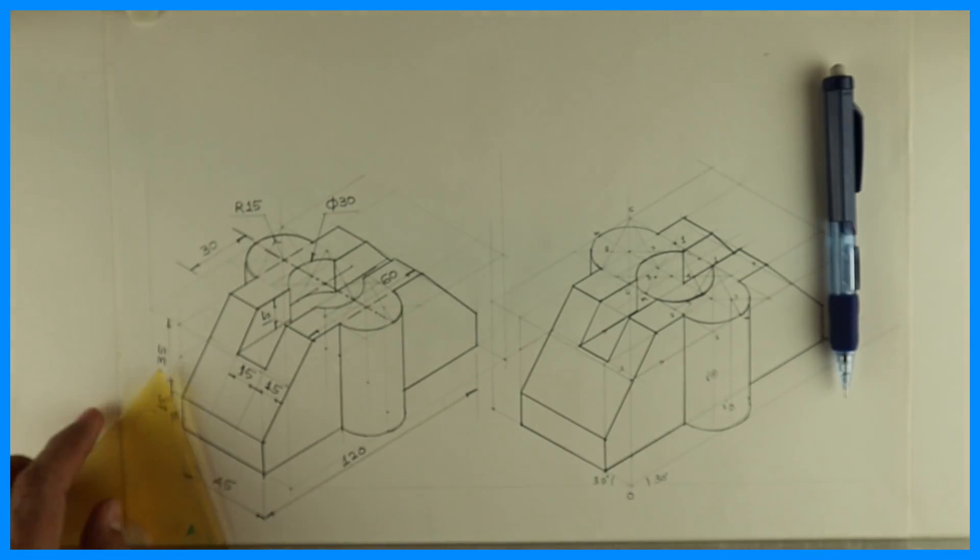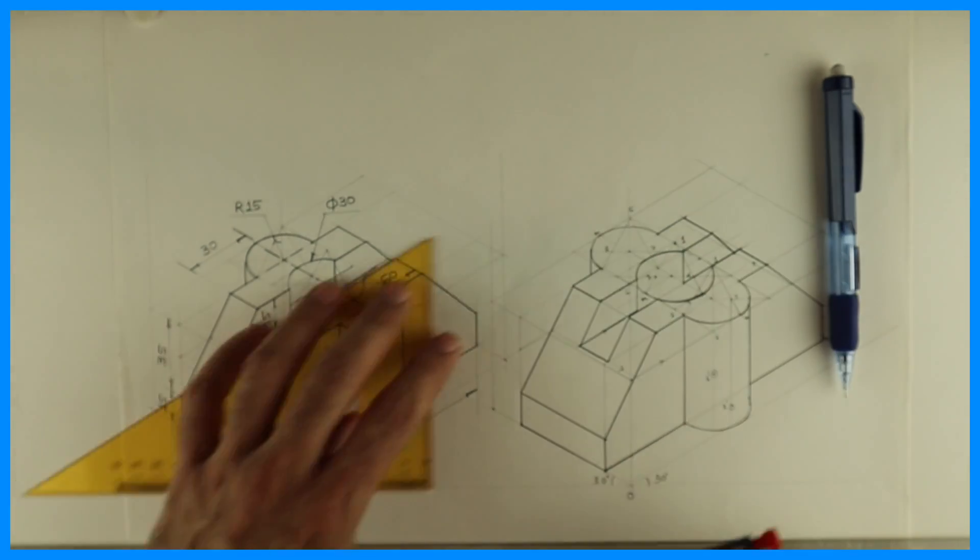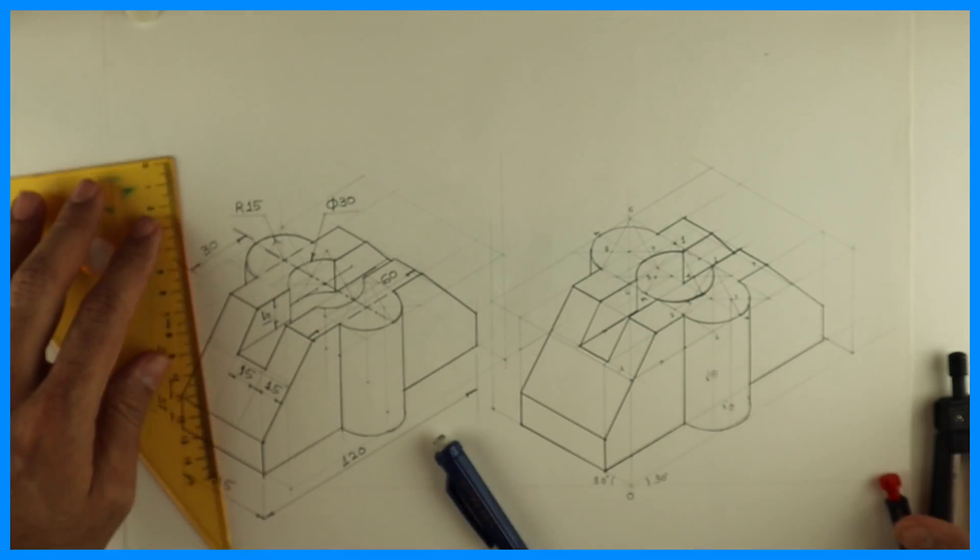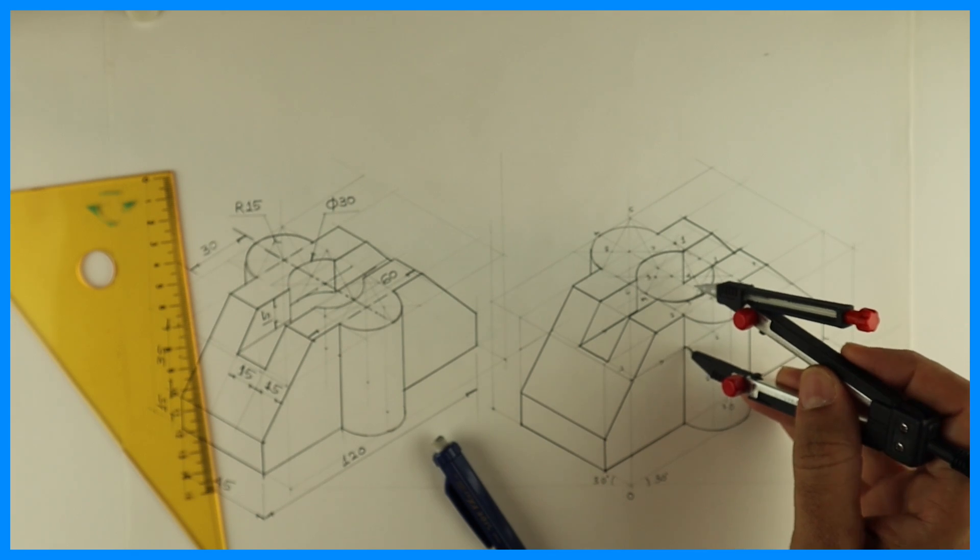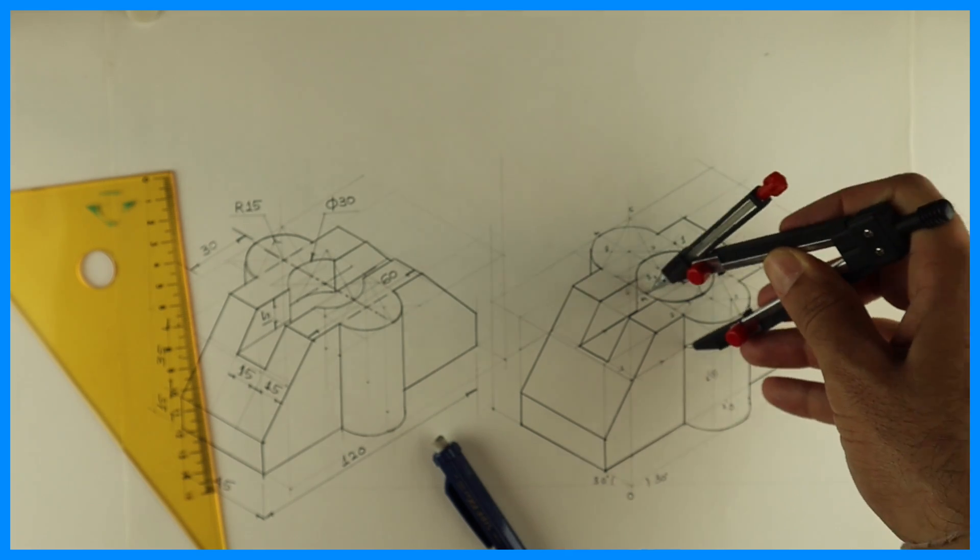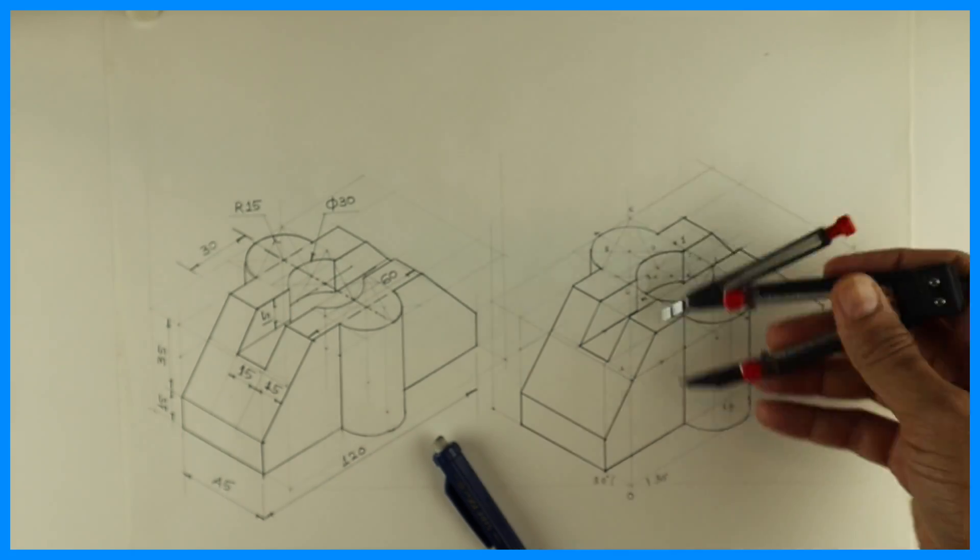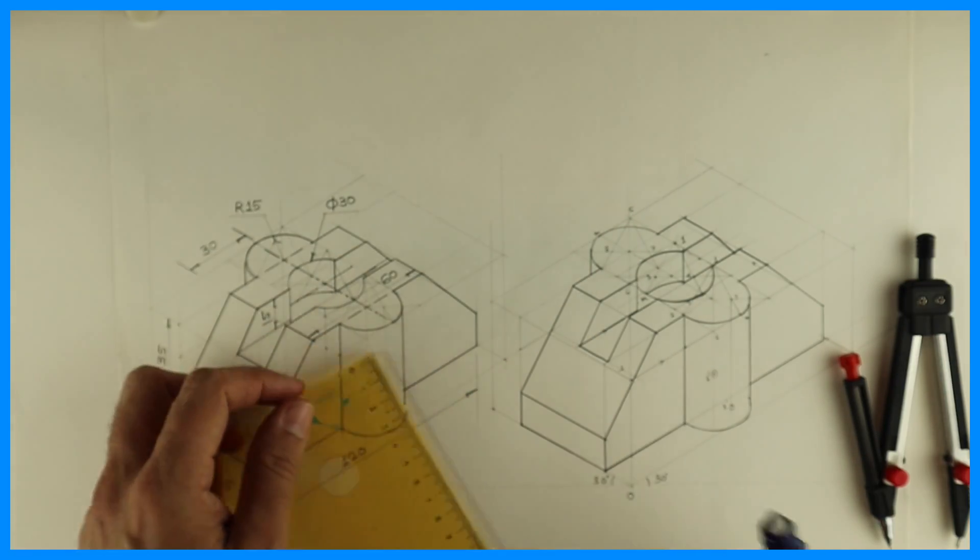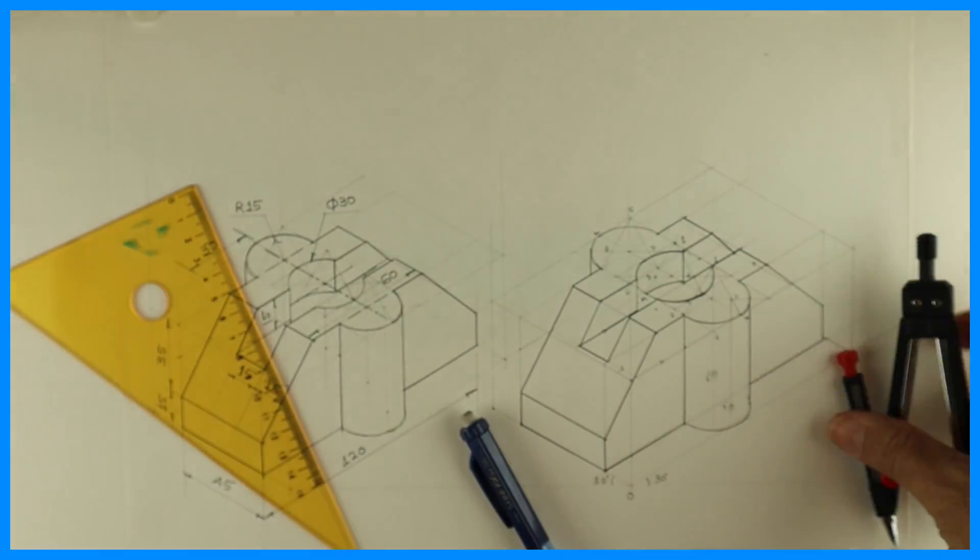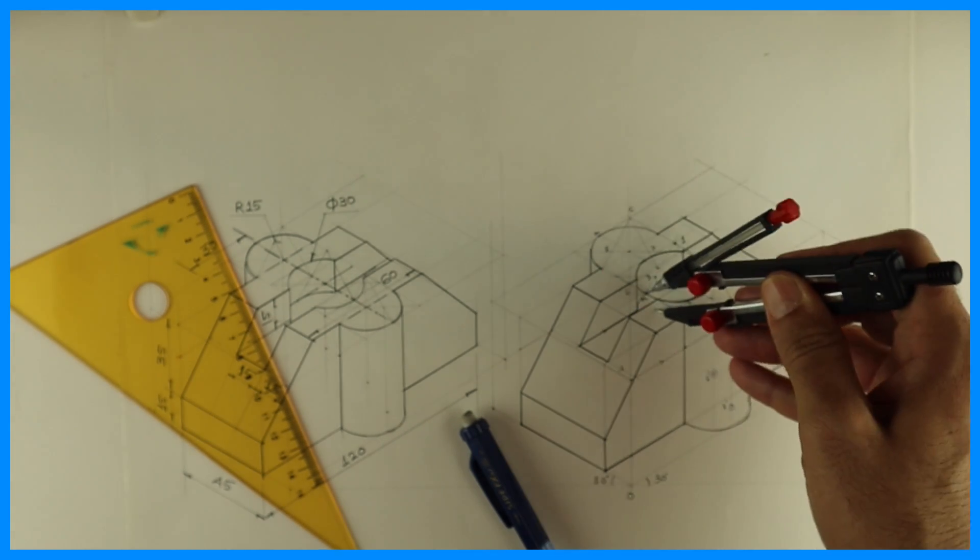Now we need to show that curve down also, so we'll take point 2 down by how much? 15. And we'll draw this curve. And here also we'll go down by 15 and we'll draw this curve.